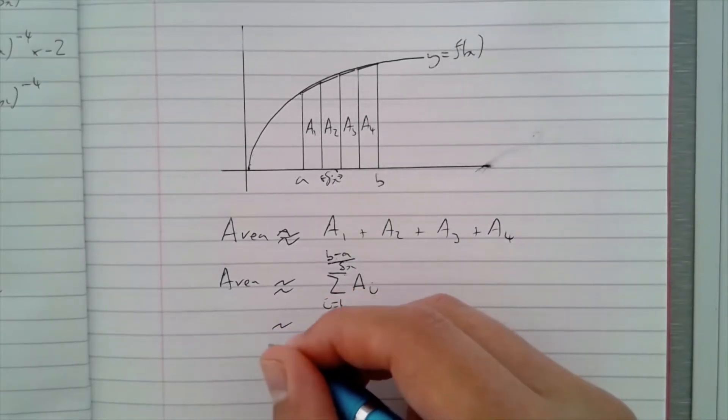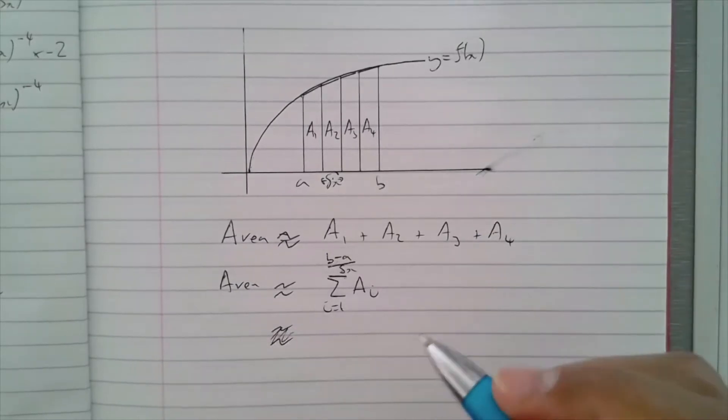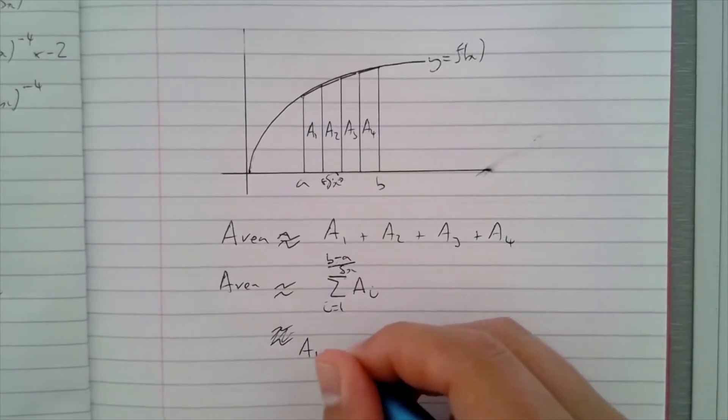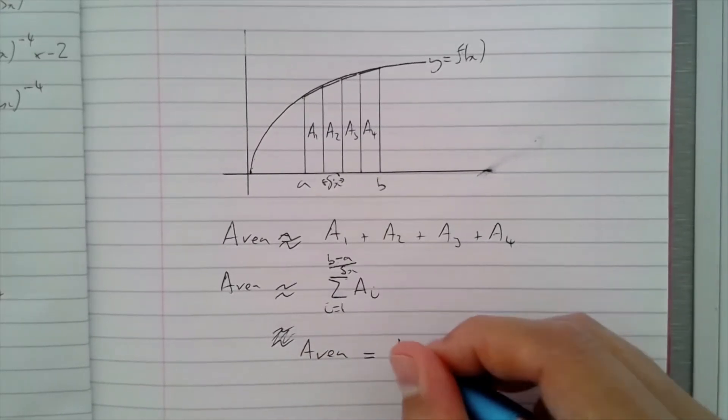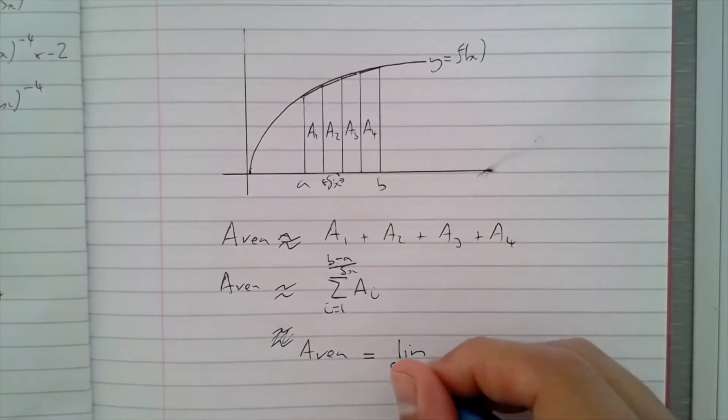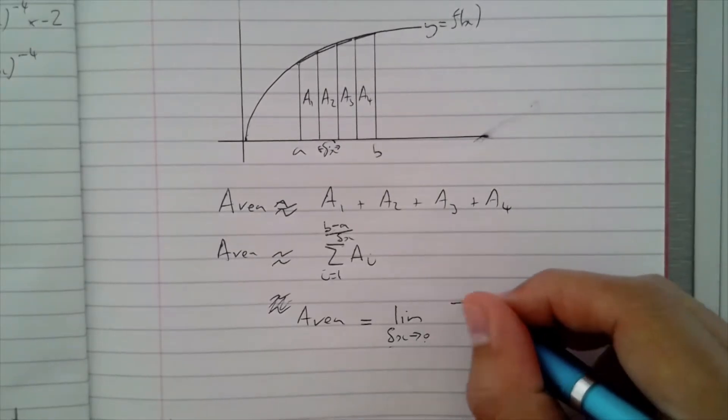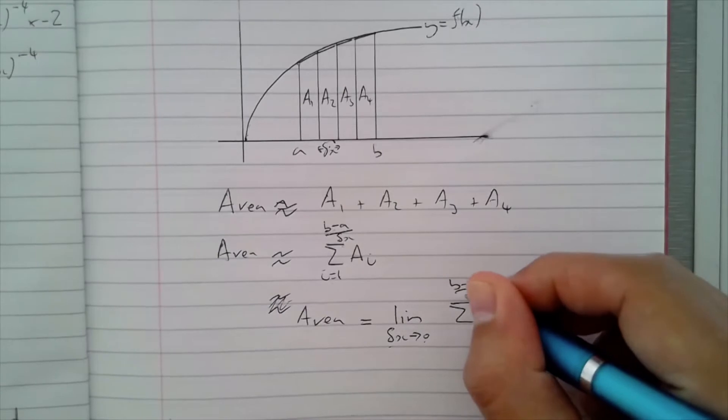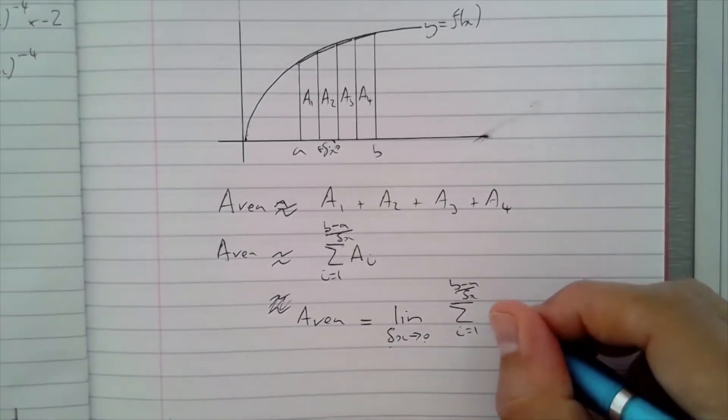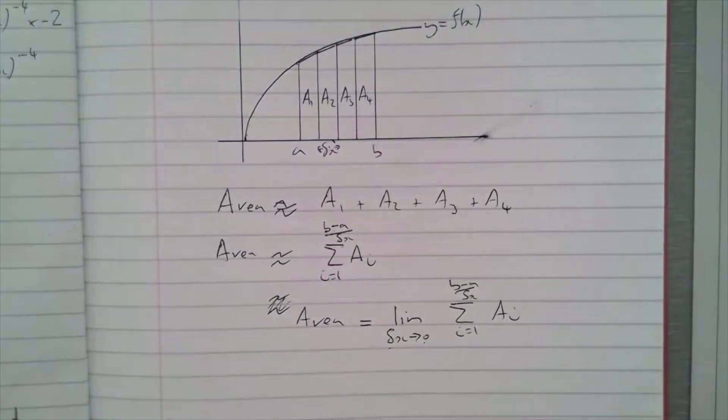We said that as delta x gets smaller and smaller and smaller, we get better areas. So we can say that the area is equal to something called the limit of delta x as it goes to zero. In other words, as the area gets smaller and smaller, this doesn't mean delta x becomes zero - it means it gets as close as possible. Imagine as close as you possibly can to zero, and the person next to you could just half that distance. You're not getting to zero, but it just gets infinitely close to zero.